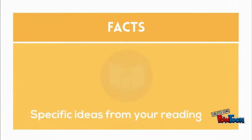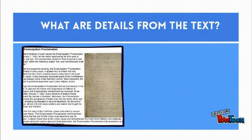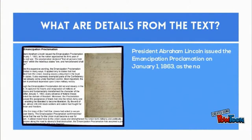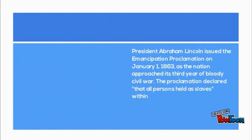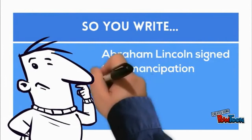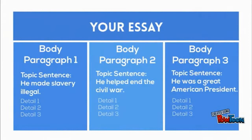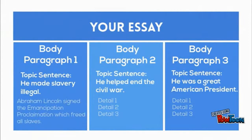Starting with facts. Facts are specific ideas from your reading — it could be your textbook or a text that you are given. We read: President Abraham Lincoln issued the Emancipation Proclamation on January 1st, 1863, as the nation approached its third year of a bloody Civil War. The proclamation declared that all persons held as slaves within the rebellious states are and henceforward shall be free. So you write: Abraham Lincoln signed the Emancipation Proclamation, which freed all slaves. Since it's about freeing slaves, let's place it in body paragraph one: He made slavery illegal.